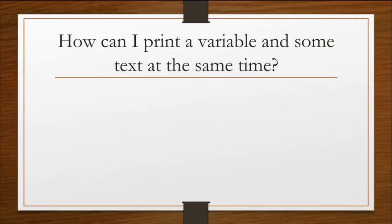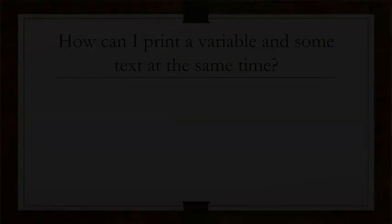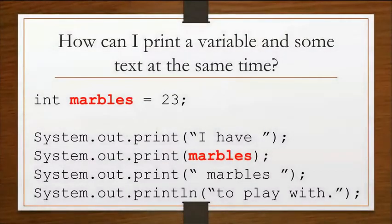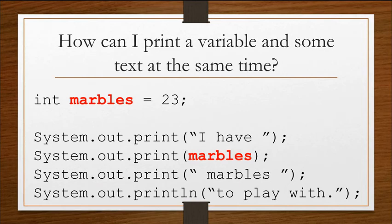How can I print a variable and some text at the same time? Perhaps you want to create a sentence. So this is how you would do it. So int marbles equals 23, and then print and println statements put together in such a way that it will build a sentence. So I have followed by marbles, marbles, the red thing is the marbles variable. Notice how this, the red marbles variable doesn't have quotation marks around it. Because it doesn't have quotation marks around it, Java interprets that marbles as a variable.